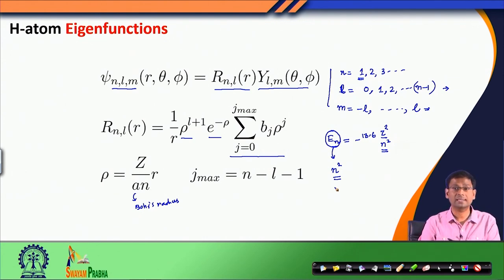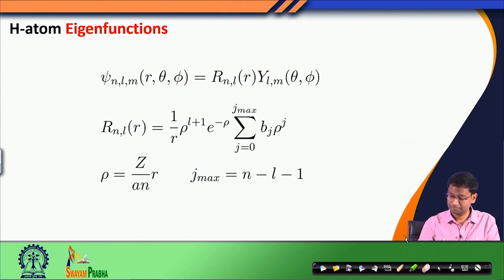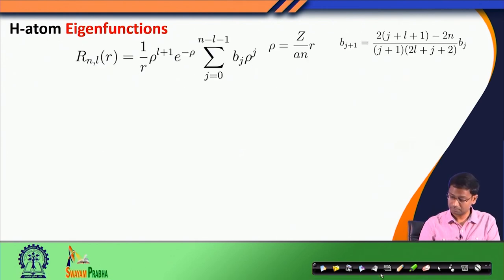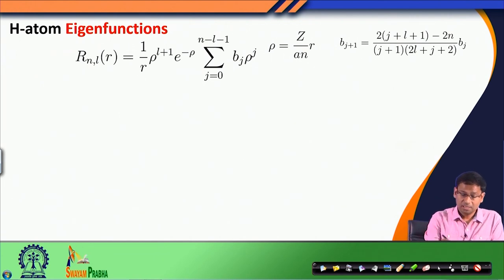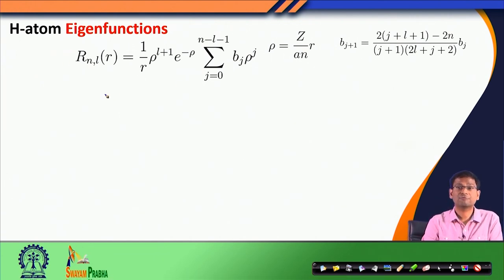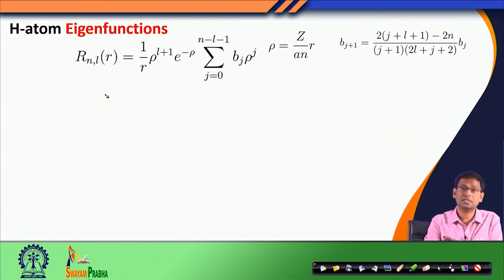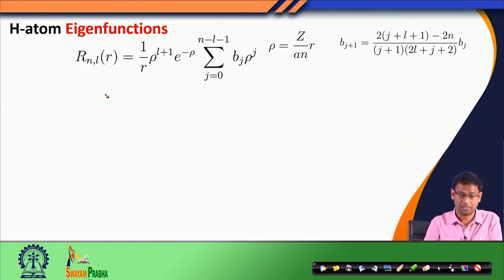We will now discuss what these eigenfunctions are and how to write them. For the time being we focus only on the radial part of the solution, since we already know the properties of the angular part given by the normalized spherical harmonics. At a later point we will combine the radial and angular solutions to obtain the full solution.